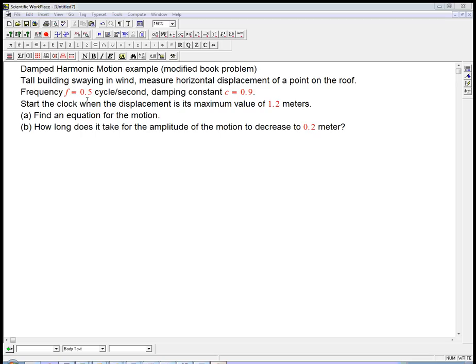Let's say we know that the frequency is 0.5, one-half of a cycle per second. The damping constant C is 0.9. And let's say we start the clock, we're going to set our T equals zero when the displacement is its maximum value, which we measure would be 1.2 meters. So it's going back and forth around some middle value, and the maximum displacement from the middle is 1.2 meters. Let's find an equation for the motion using the standard model.